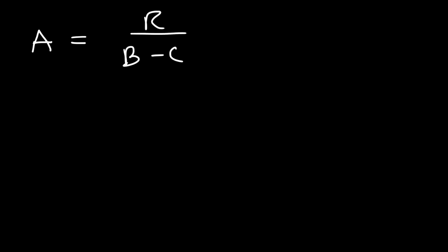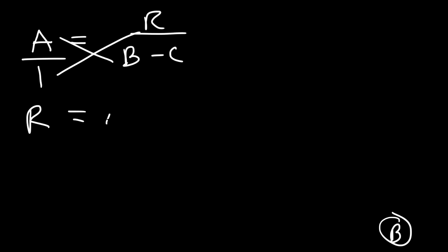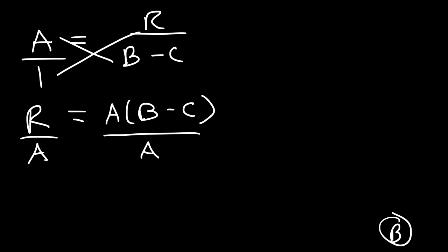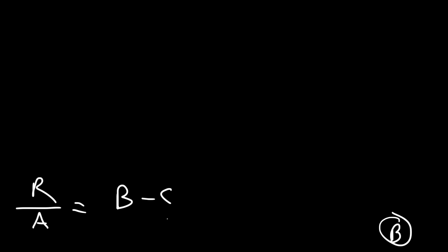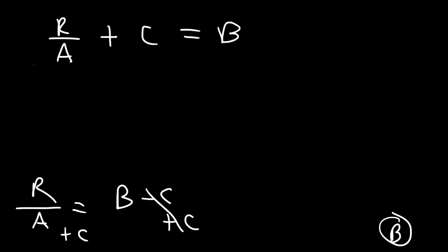Now let's say a equals r divided by (b minus c) — a random equation. Let's solve for b. I recommend writing a over 1 and cross multiplying: 1 times r is r, and a times (b minus c) is a(b minus c). Now divide both sides by a, giving r/a equals b minus c. Finally, add c to both sides, so r/a plus c equals b. And that's all you need to do.